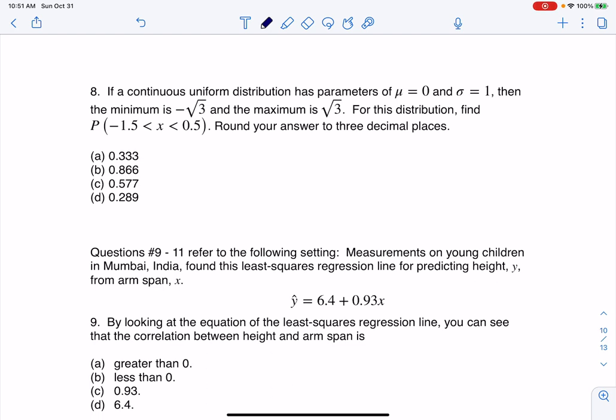Alright, let's take a look at number 8. It says if a continuous, ooh, there's a buzzword, a uniform distribution has a mean of 0 and a standard deviation of 1, the minimum is negative root 3, max is positive root 3, let's find this probability.